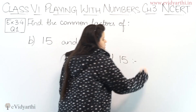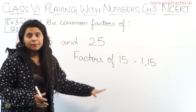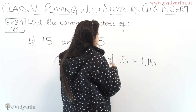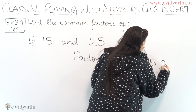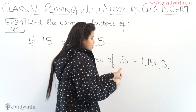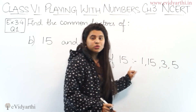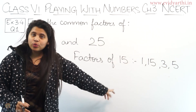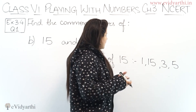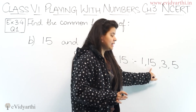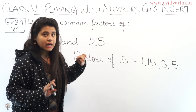Factors of 15: starting factors are 1 and 15, because 1 is always a factor and the number itself is also a factor. Then 2 is not in the table. But 3 is a factor: 3 into 5 is 15. So the factors of 15 are 1, 15, 3, and 5.